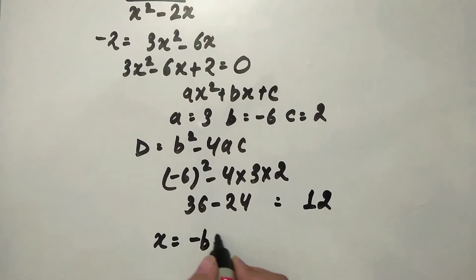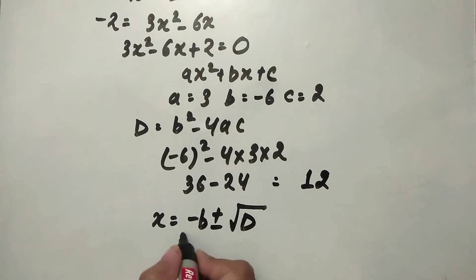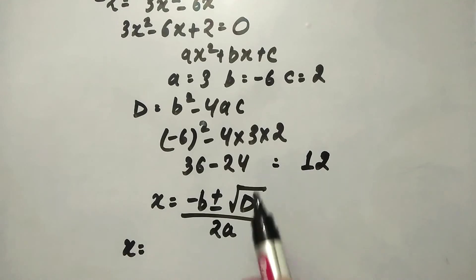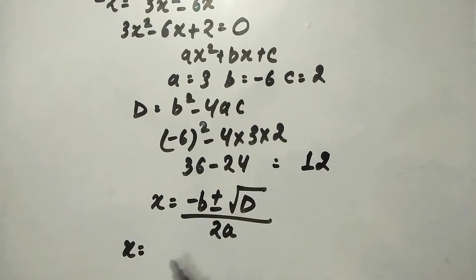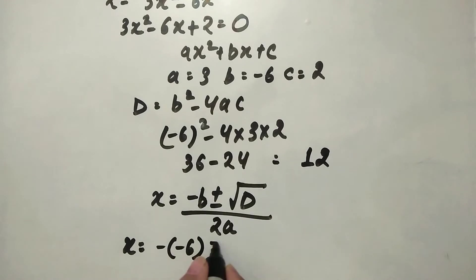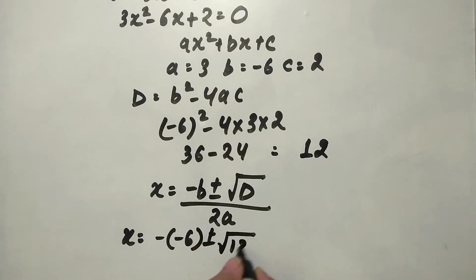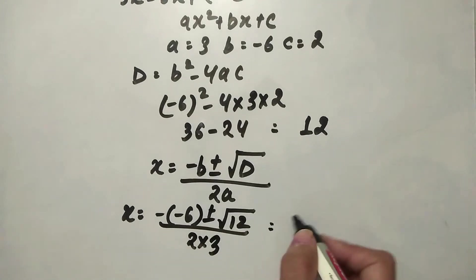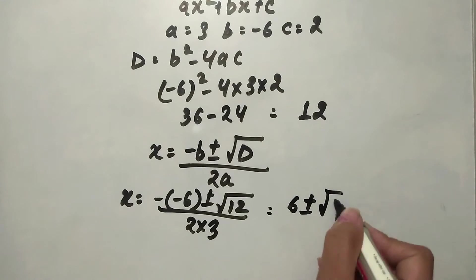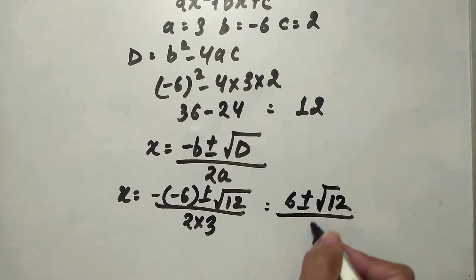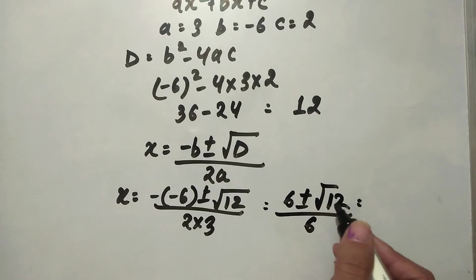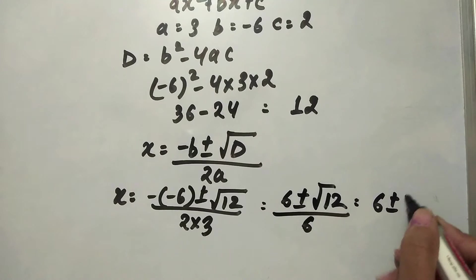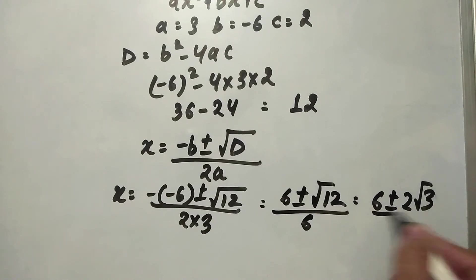Now we will find x's value using the formula: x equals minus b plus or minus under root D upon 2a. x equals minus of minus 6, plus or minus under root 12, upon 2 into 3. This gives 6 plus or minus under root 12 upon 6. Solving root 12 gives 2 root 3, so x equals 6 plus or minus 2 root 3 upon 6.